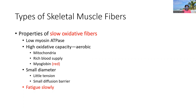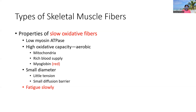They're going to have a lot of mitochondria, a lot of rich capillaries and blood supply to bring oxygen in, and a lot of myoglobin — which is the storage form of hemoglobin in muscle — as a source of that oxygen as well. They're going to have a small diameter, which means they provide a small amount of tension and have a small diffusion barrier, so oxygen can more easily diffuse from the capillaries into the muscle.